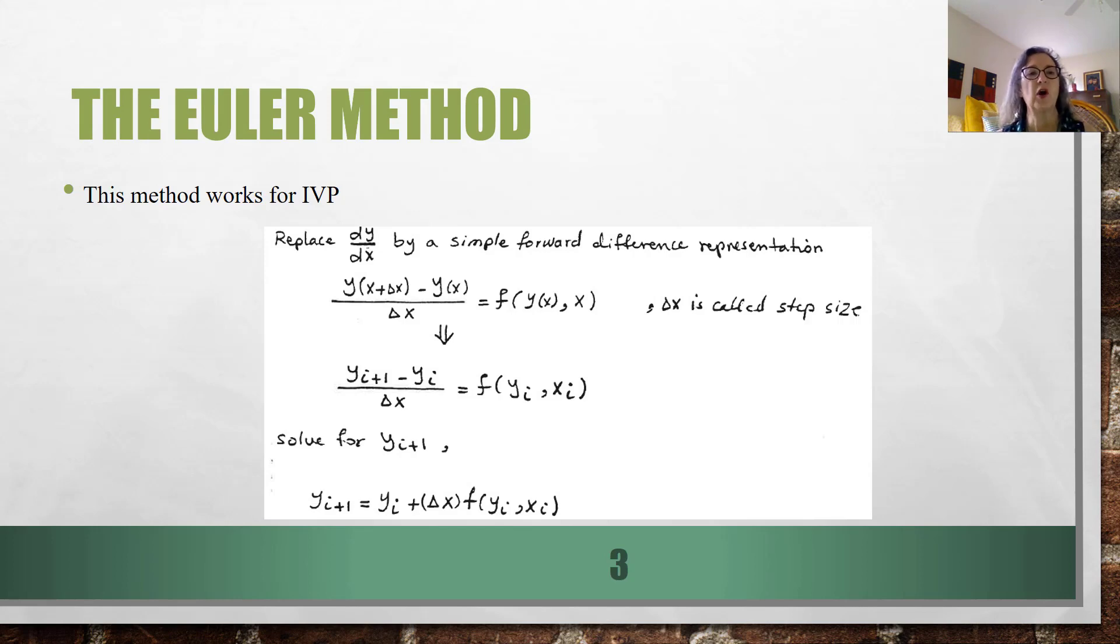Now the Euler method only works for initial value problems, and essentially what you're doing is replacing the derivative with a simple forward difference representation and solving that for yi plus one, and it doesn't always work, but when it does, it's easy. It's one of those things that I do end up using it because I can derive it.